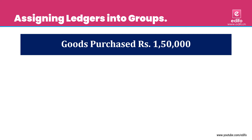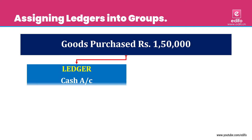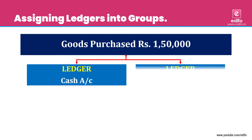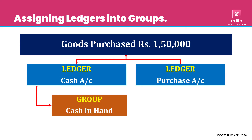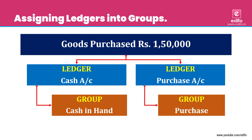Next transaction: goods purchased, rupees 1 lakh 50,000. The outgoing aspect is cash and the incoming aspect is goods — that is purchase. So two aspects: purchase account and cash account. Cash account is 'Cash in Hand' and purchase account is related to a separate group called 'Purchase' group.